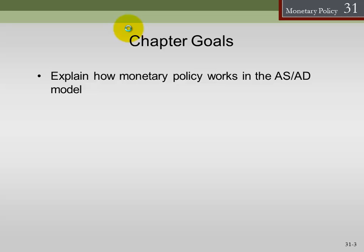While the aggregate supply-aggregate demand model leaves a lot to be desired as far as truly describing how the economy works, because it is quite simple, it is still the single best model for getting an intuition behind what's going on with policy and policy decisions.